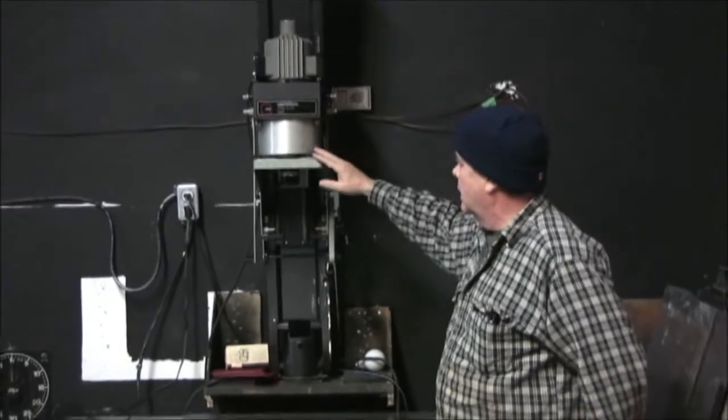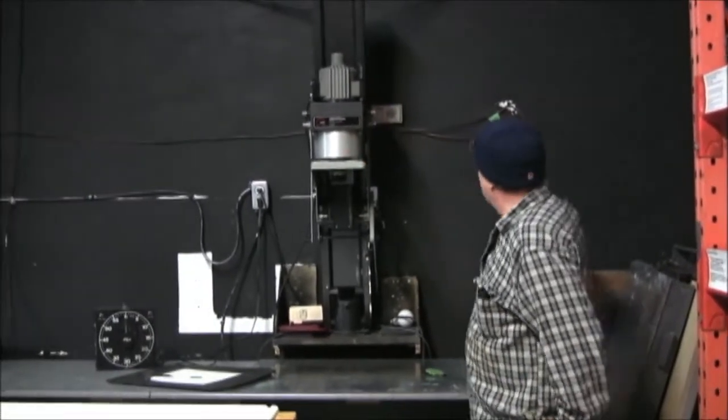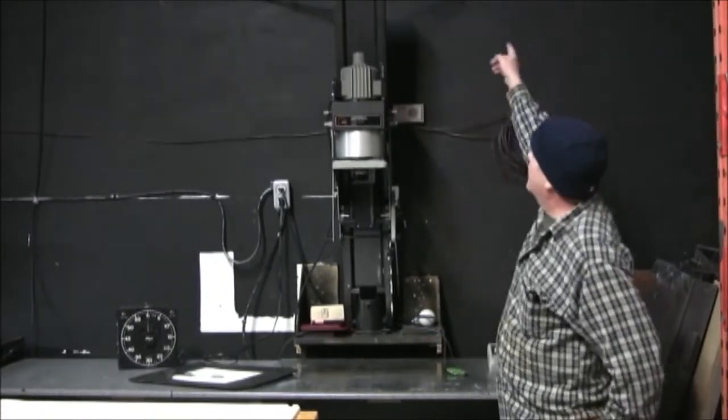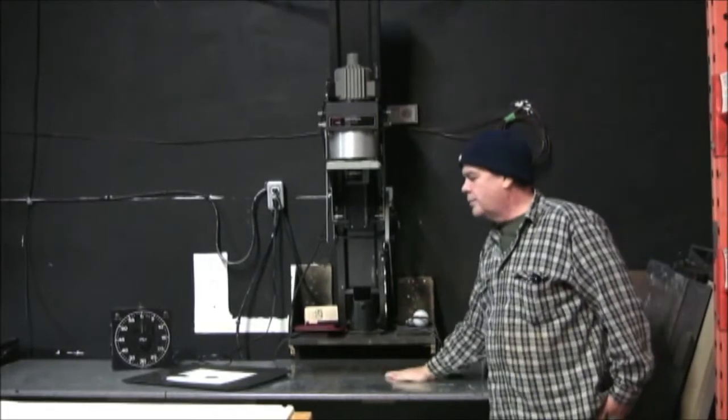This is a typical enlarger that I use. It's a condenser enlarger. It is wall-mounted, as you can see. It's braced at the top and then it's aligned with the laser aligner that we use to align it to the baseboard.